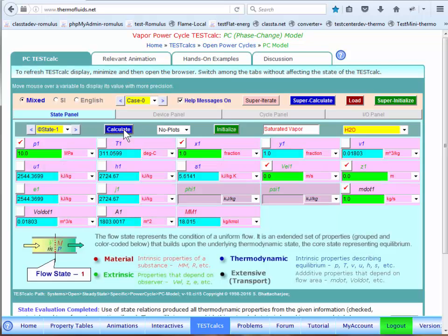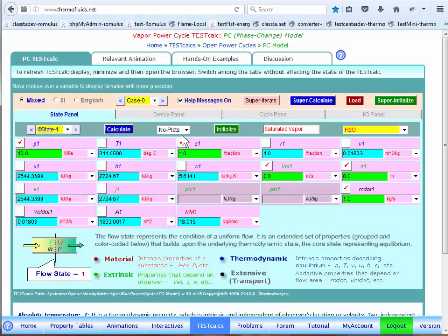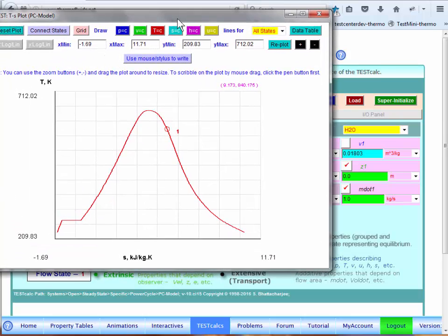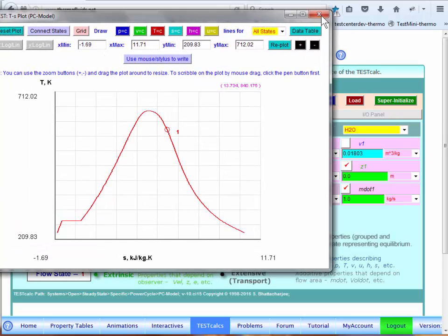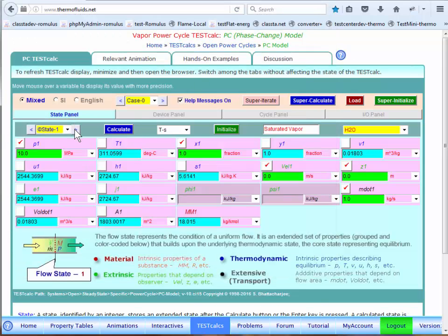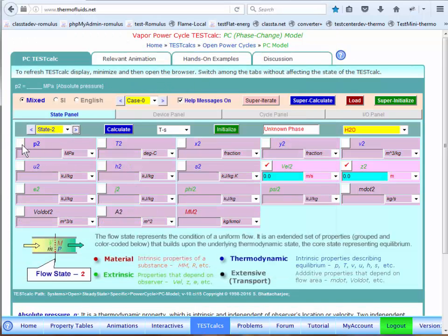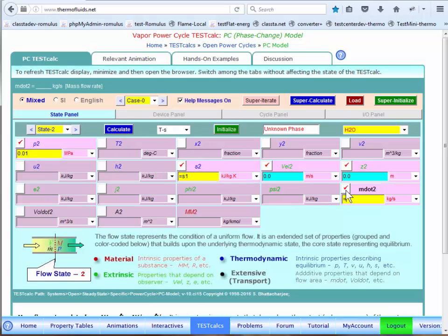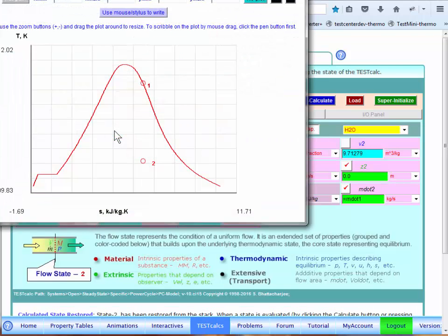We'll assume a mass flow rate of 1 kg per second to begin the problem, and we'll come back later and correct it. Once we know the output based on 1 kg per second, we can scale the problem up and find the correct m dot. So let's calculate the state. It should be a saturated state. Notice that you can go to the T-S diagram and verify that state one is indeed saturated vapor.